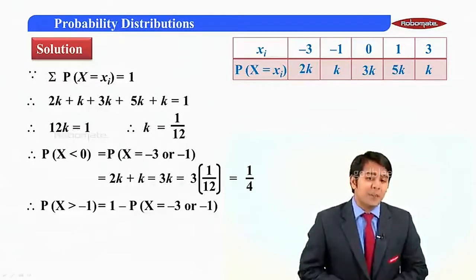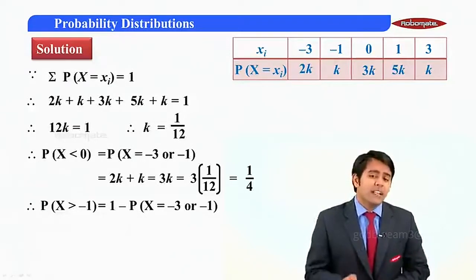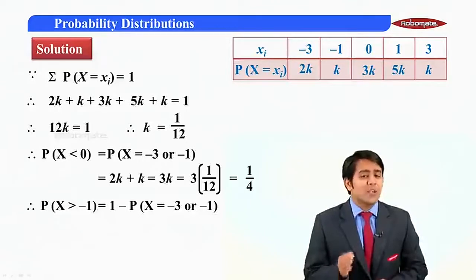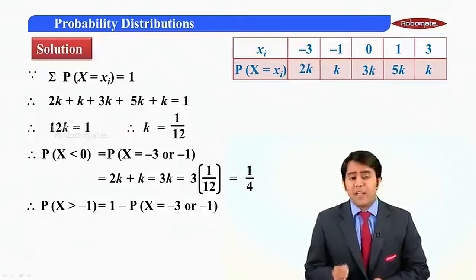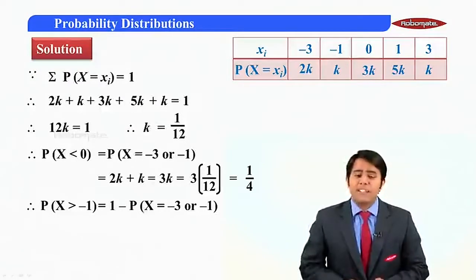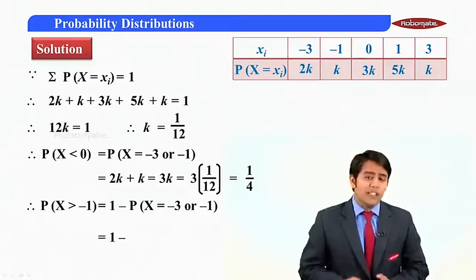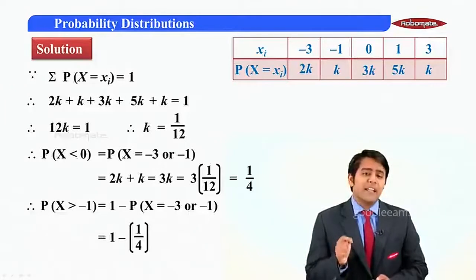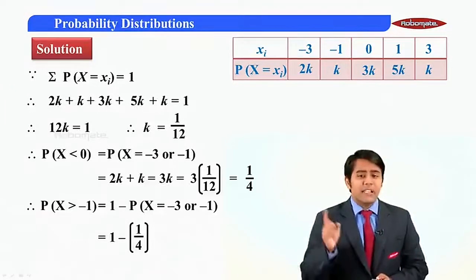p of x greater than minus 1 is simply equal to 1 minus p of x less than equal to minus 1. Now less than equal to minus 1 means 1 minus p of x equal to minus 3 or p of x equal to minus 1. So this value will be simply equal to 1 minus, inside the bracket we have to write the value for p of x less than equal to minus 1.